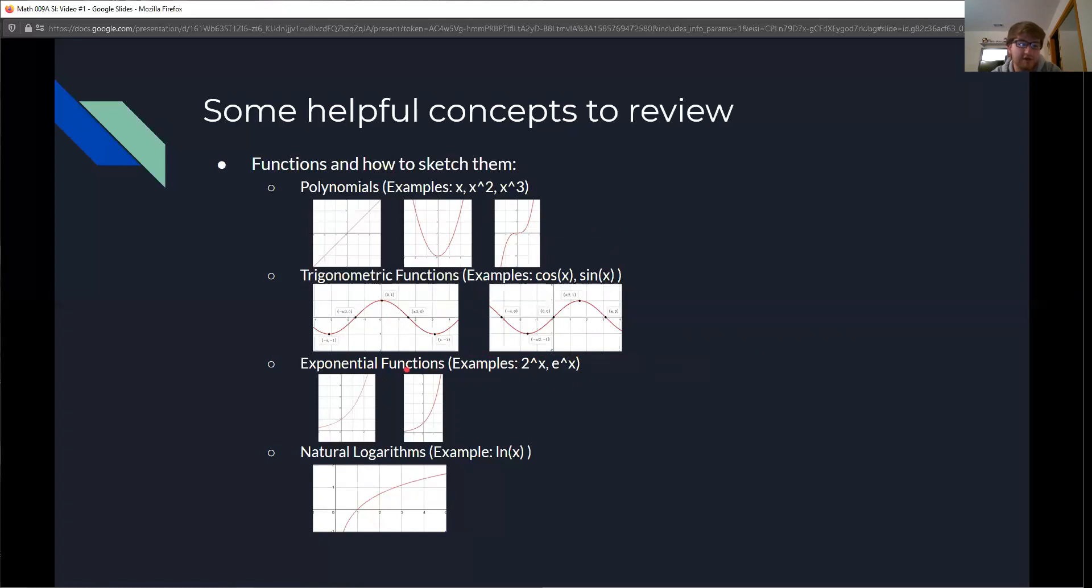Next up are exponential functions. This would be anything like 2 to the x or e to the x or any constant to the x really. They're all going to look pretty much like these. Lastly, something that Professor Wong didn't go over in lecture but I think is probably going to be helpful later on is natural log of x. Just remember the basic shape for natural log of x, remember some of its properties, and remember that natural log of x is the inverse of e to the x.